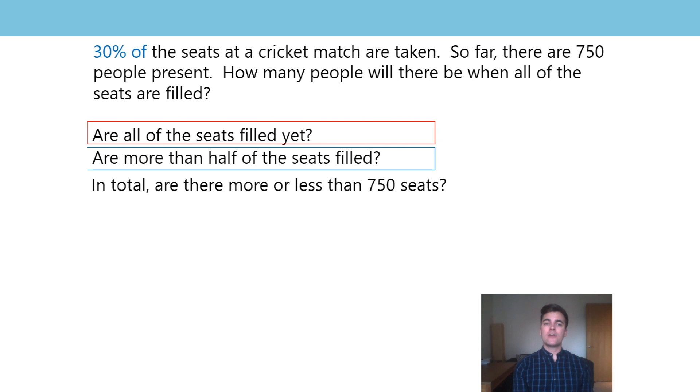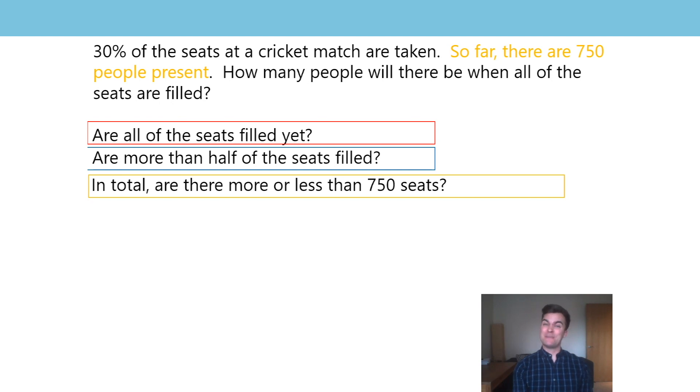And in total, are there more or less than 750 seats? In total. What do you think? More? So far, there are 750 people present. 30% is 750. So in total, 100%, the number is going to be much larger than 750. Maybe start estimating. 30%, that's almost a third. So 750 is approximately one third of the total. We're looking at a number that's more than three times the size of 750. Just a little bit more, but approximately three lots of 750.